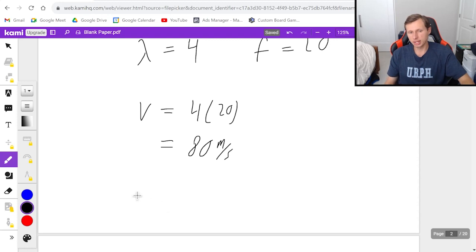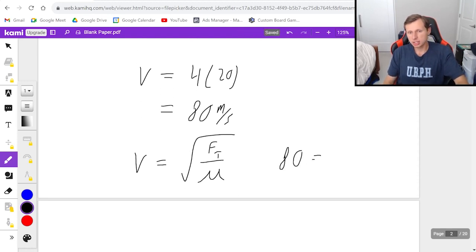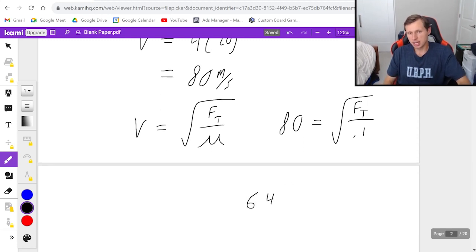And finally, I can plug that in: v equals square root of F_T divided by μ. So that means 80 is equal to the square root of my tension force divided by μ, which we said was 0.1. So now to solve for the tension force. First, I got to square both sides. That's going to be 6400 equals F_T over 0.1.